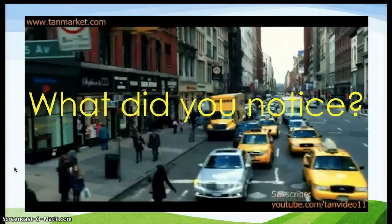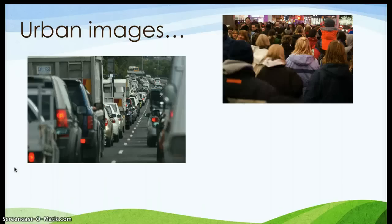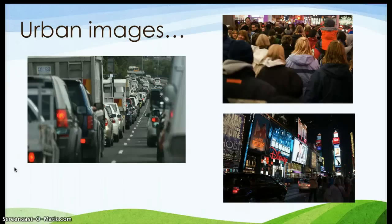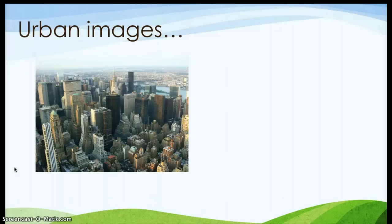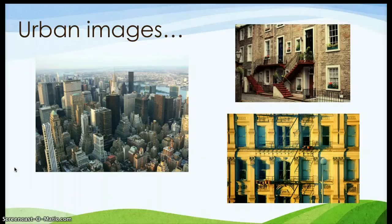What did you notice in that urban community? Here are some urban images, some pictures from urban communities. If you reflect back on the video, you can see that there are a lot of vehicles in urban communities, a lot of people, as well as stores and shopping opportunities. Also, we have buildings — usually tall buildings called skyscrapers — in urban communities. These are pictures of two places where people might live or work in an urban community.